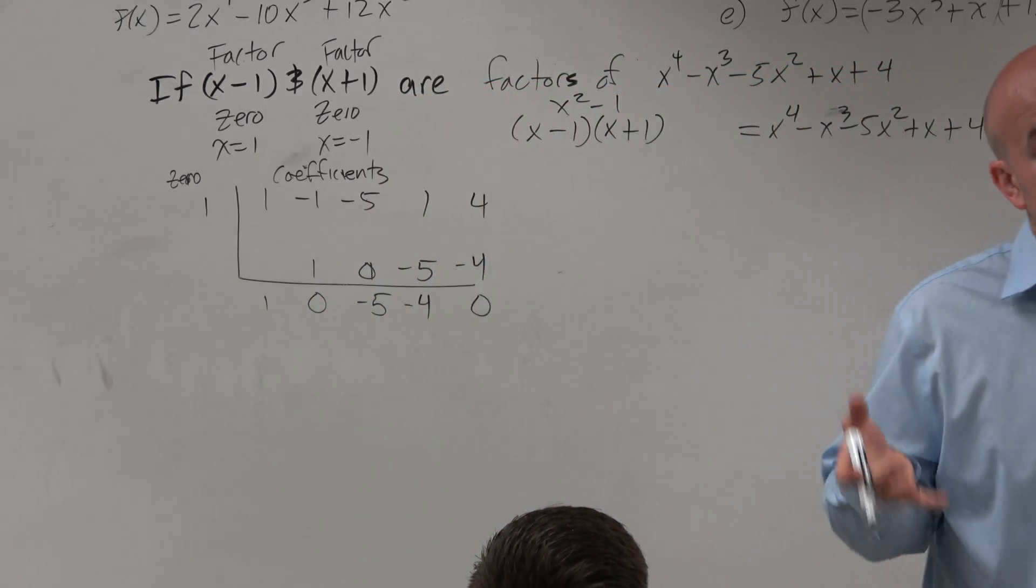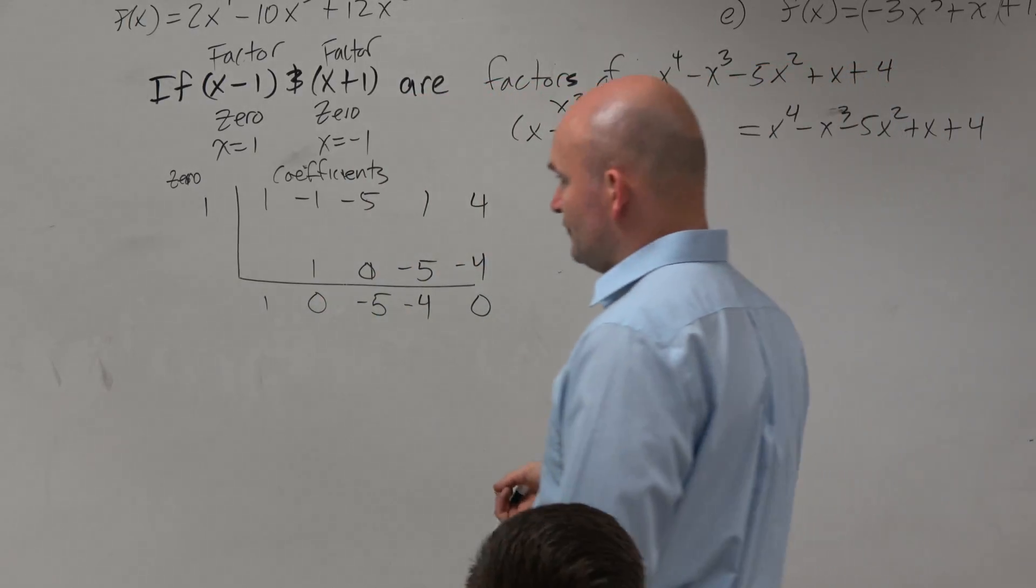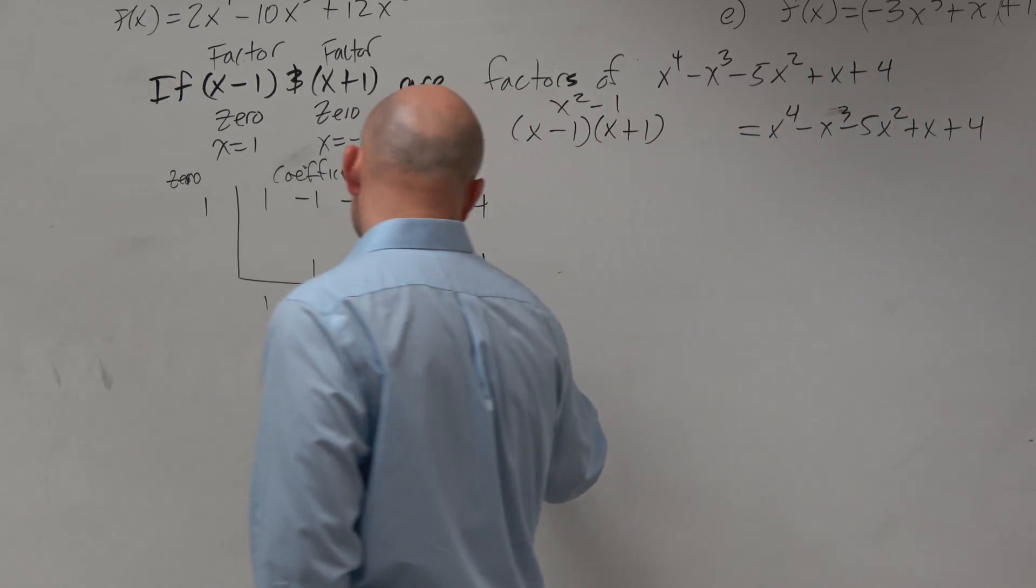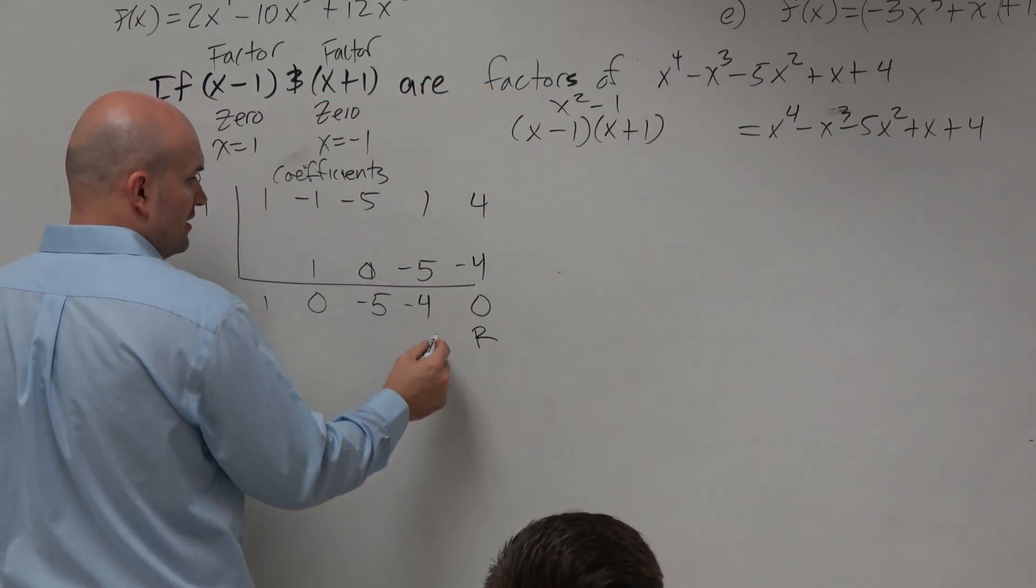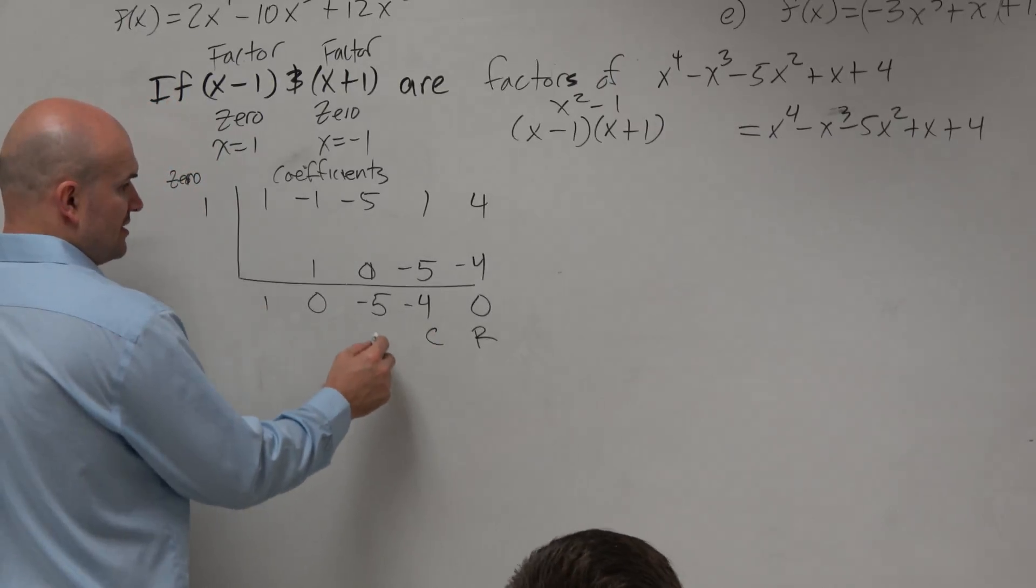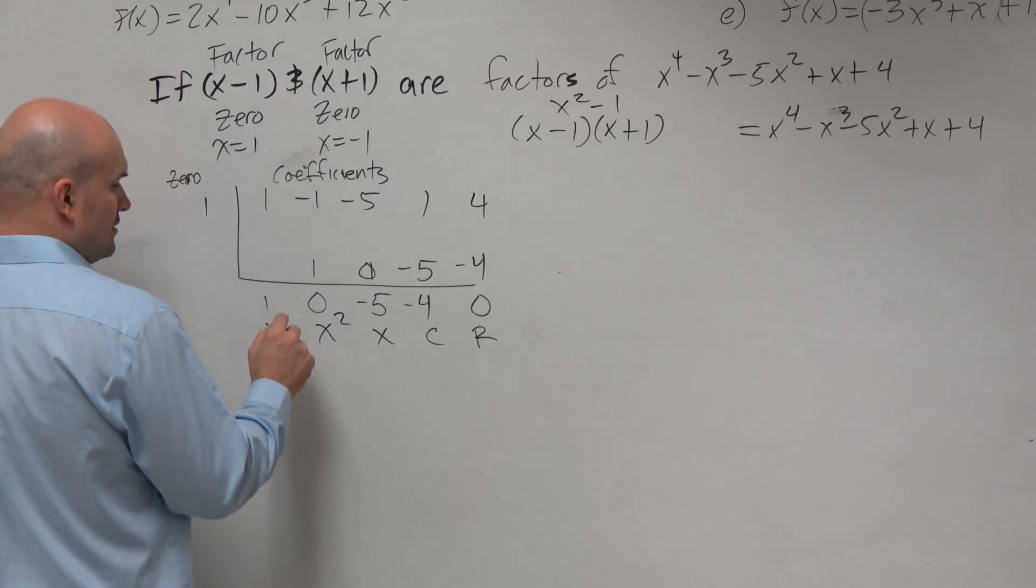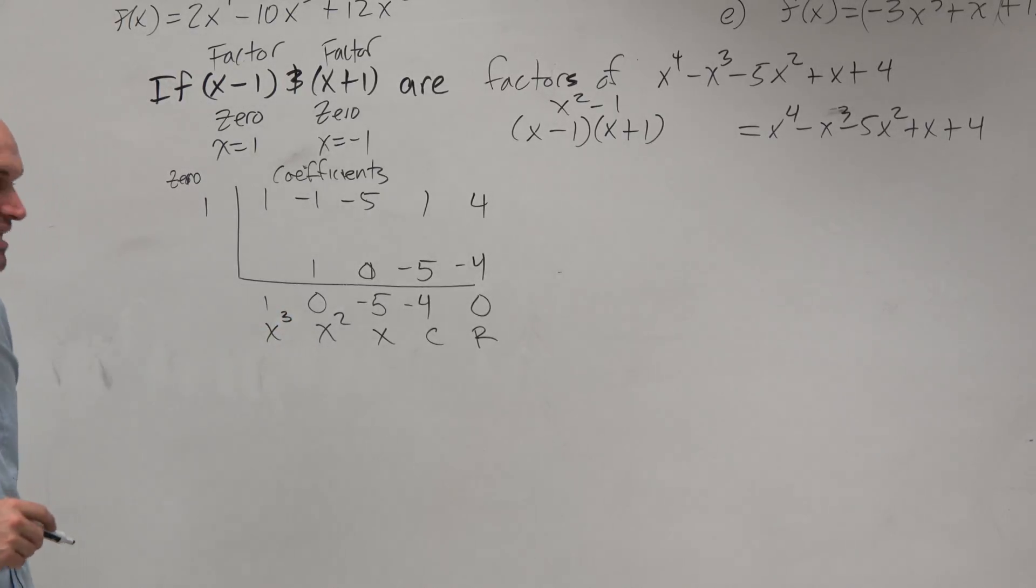So again, guys, remember, though, our quotient here is just given our coefficients. Multiply on the diagonals, add on the verticals. This is our remainder, which is good. This is the coefficient of our constant term, our linear, quadratic, and cubic.